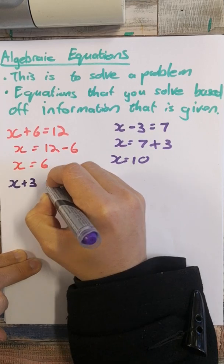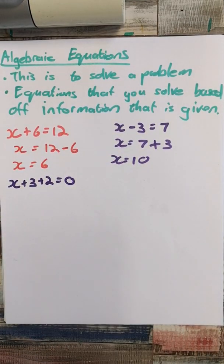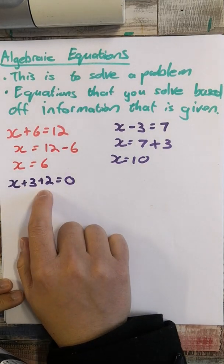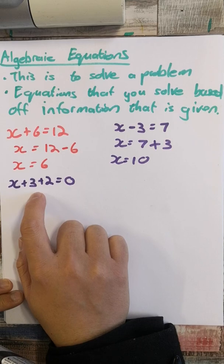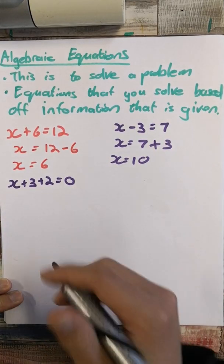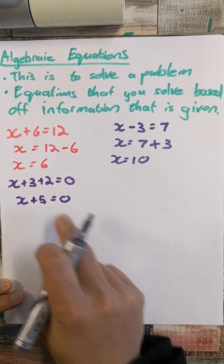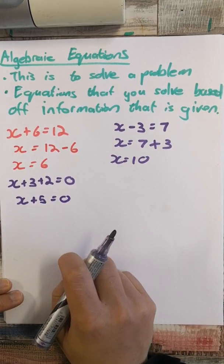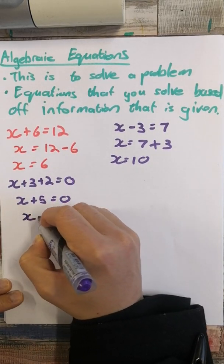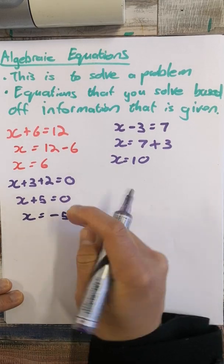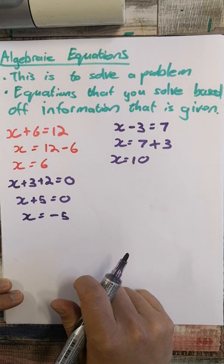x plus 3 plus 2 equals zero. I'm left with just addition, so I look for like terms — yes, 3 plus 2 equals 5. So x plus 5 equals zero. I want to get x alone, so I take the 5 over — it's a positive 5, so it changes to negative 5. Zero minus 5 is negative 5. That's your final answer.